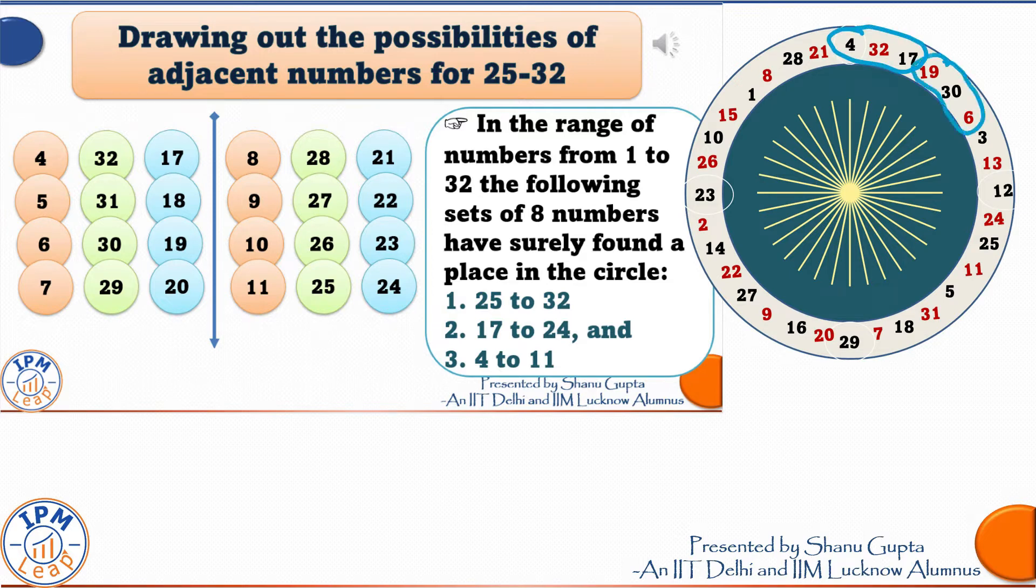19, 30, 6. 24, 25, 11. 5, 31, 18. 20, 29, 7. 22, 27, 9. 23, 26, 10. And the last one 8, 28, 21.